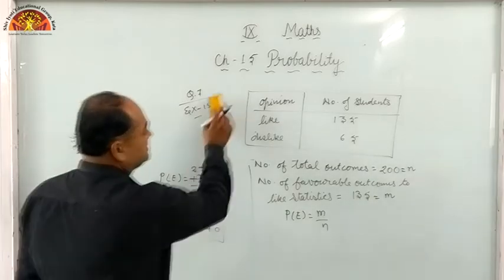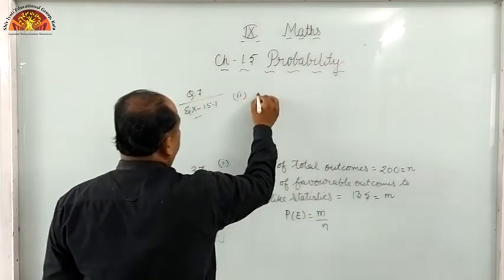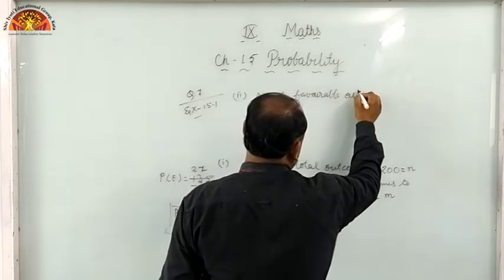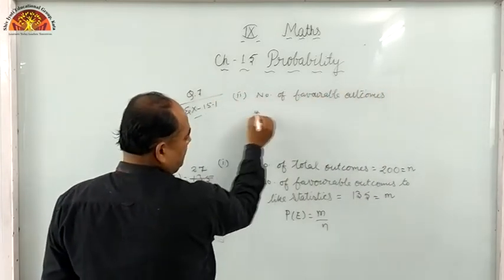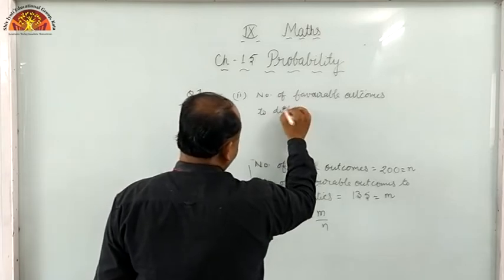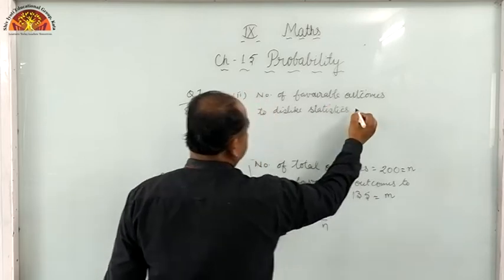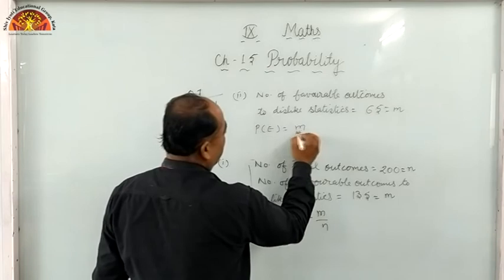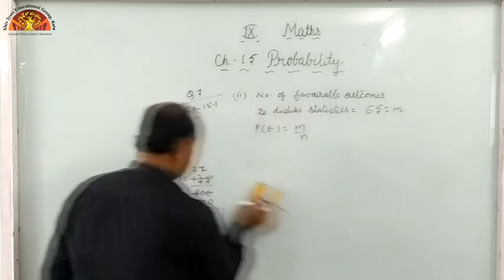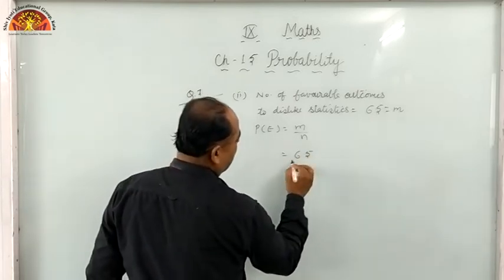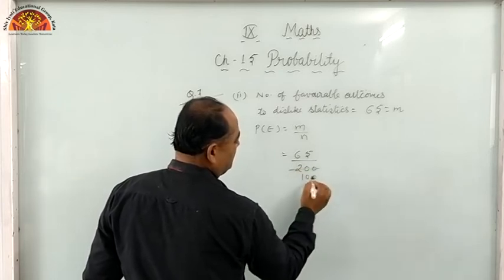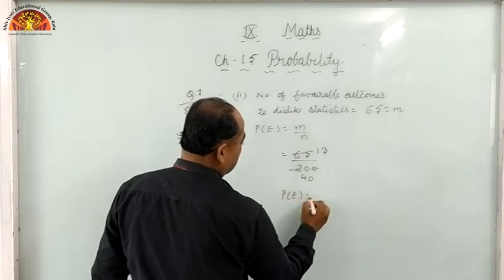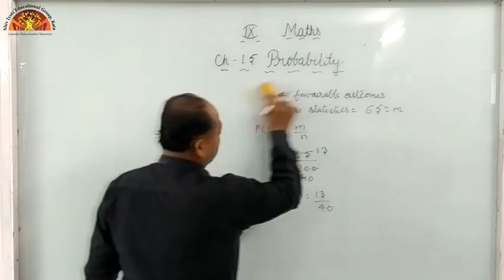Second part: number of favorable outcomes for 'dislike statistics' is 65, total outcomes is 200. Probability equals 65 upon 200, which simplifies to 13 upon 40.